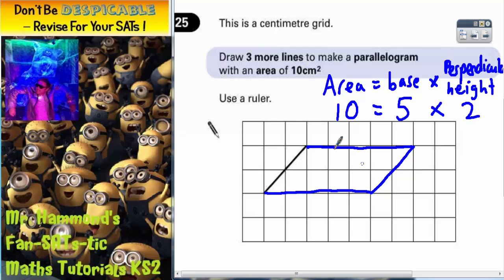Well, let's count the whole squares first. We've got 1, 2, 3, 4, 5, 6, 7, 8. These two halves put together make a whole which would make 10. So that parallelogram does indeed have an area of 10 centimetres squared. So that's the correct answer.